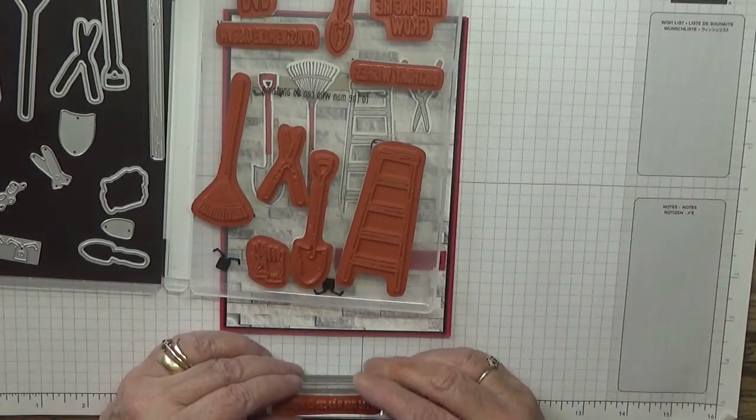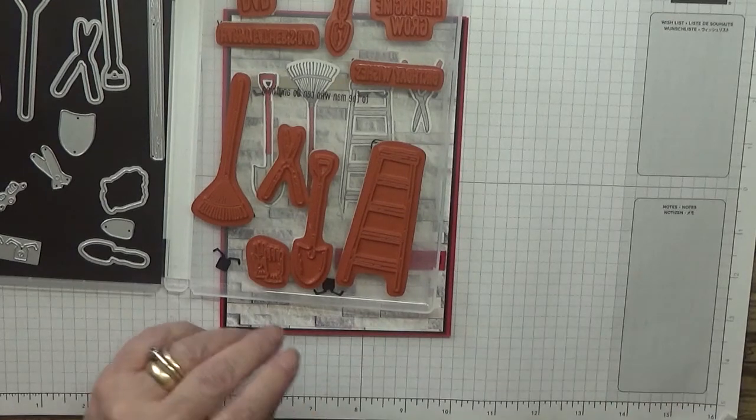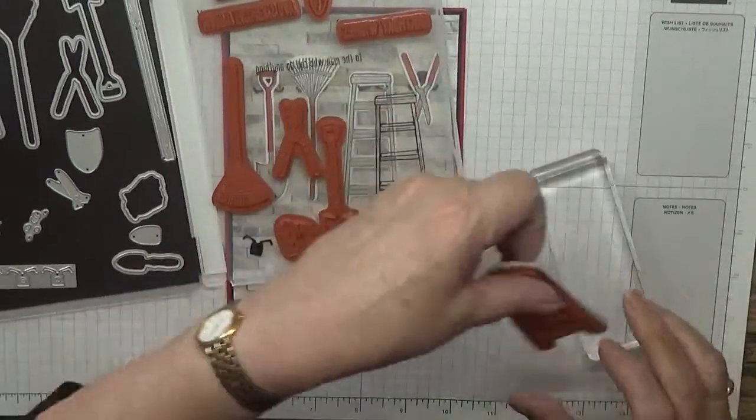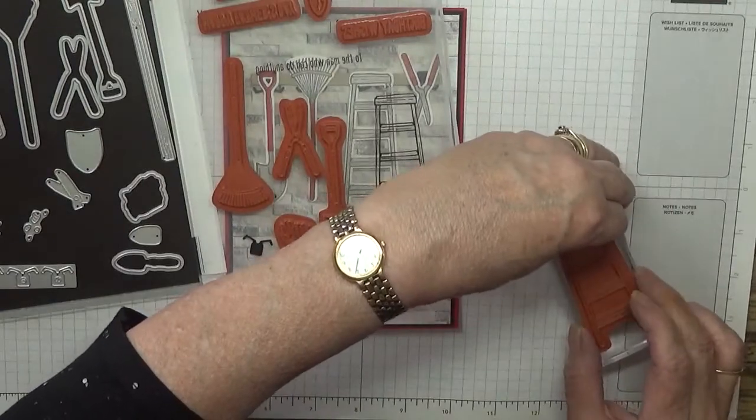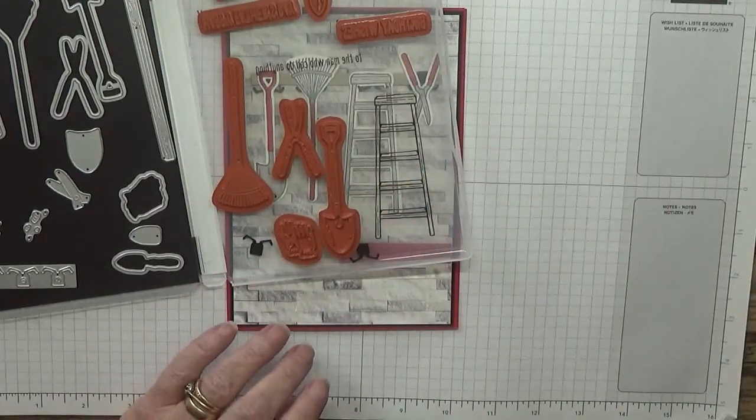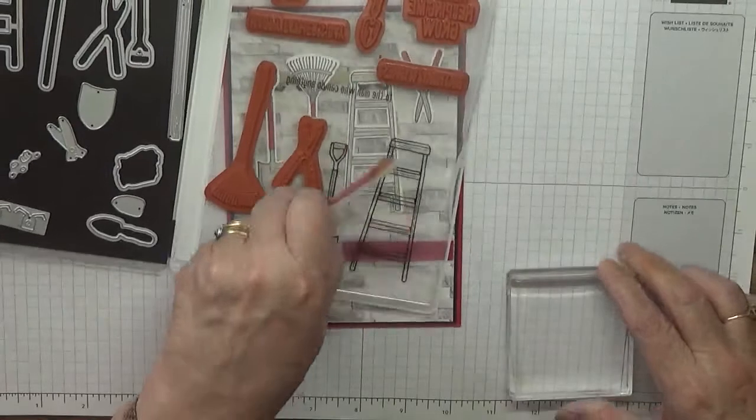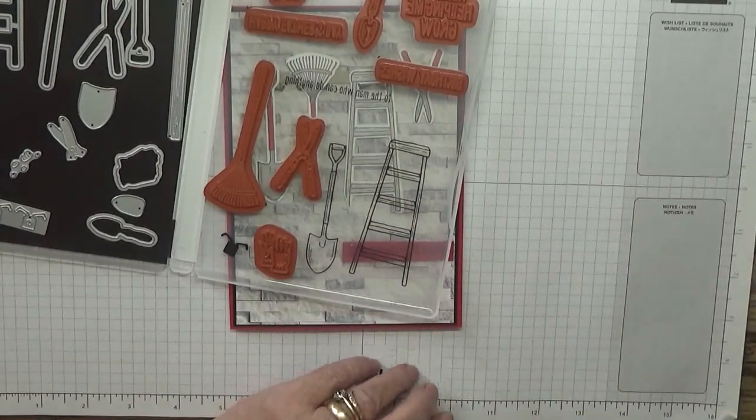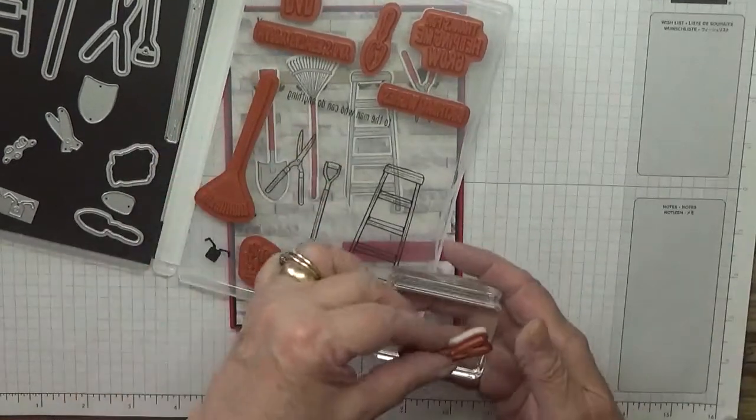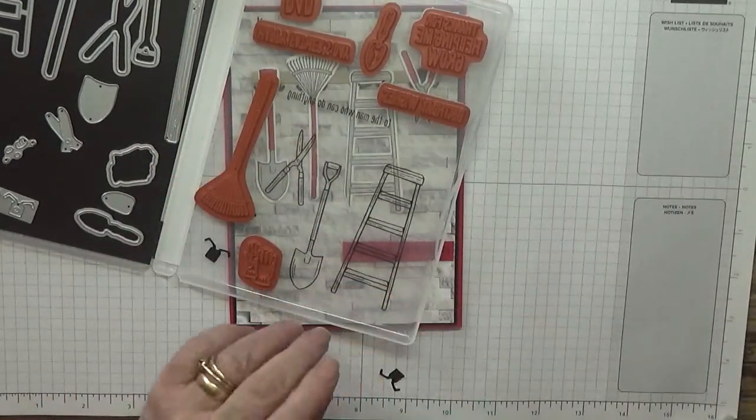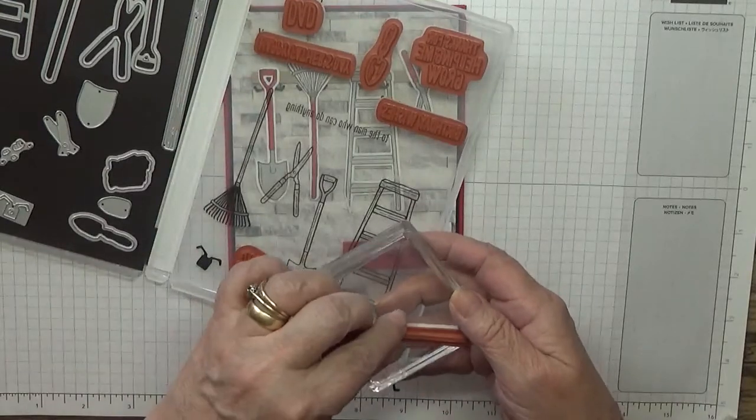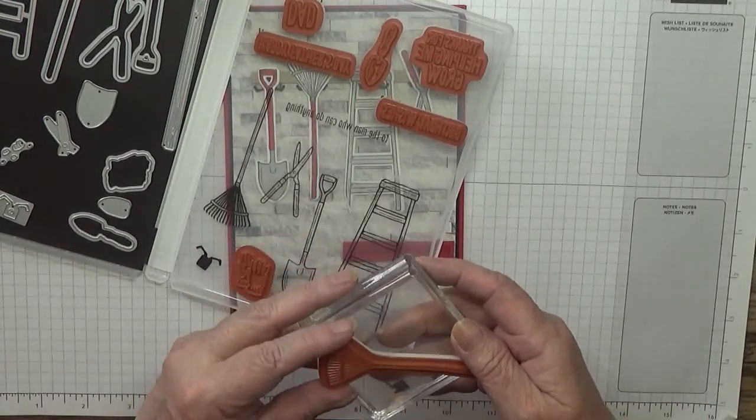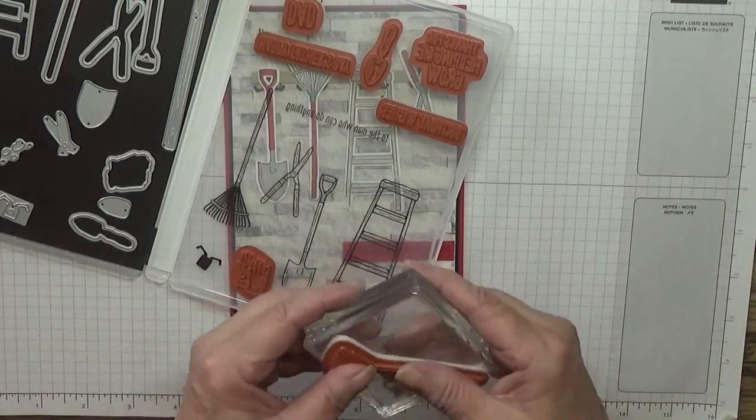As you can see, I haven't got the stamps out yet. This one can go here. Spade, shears, and rake.